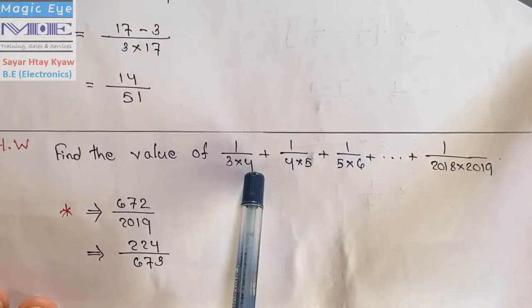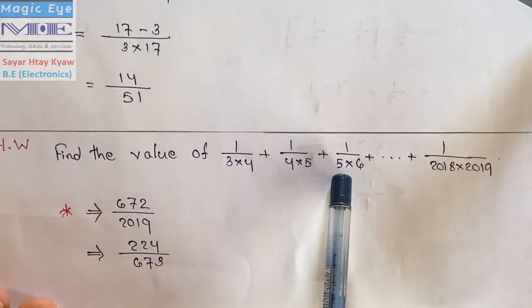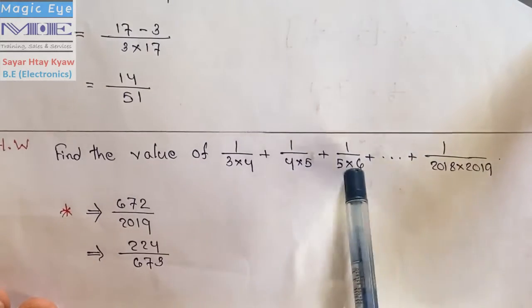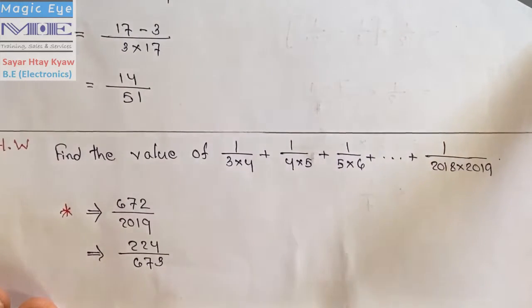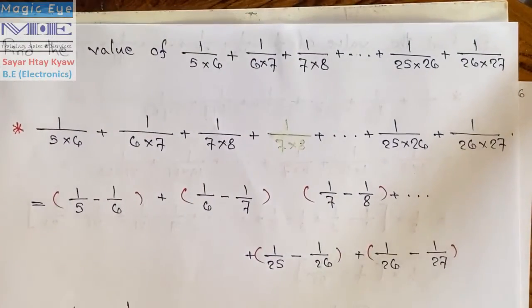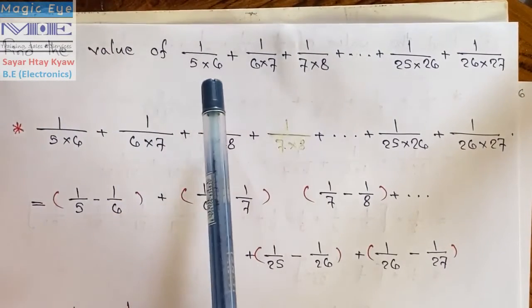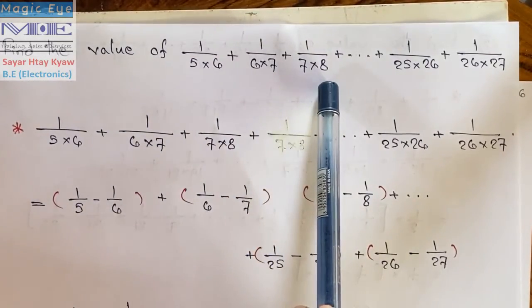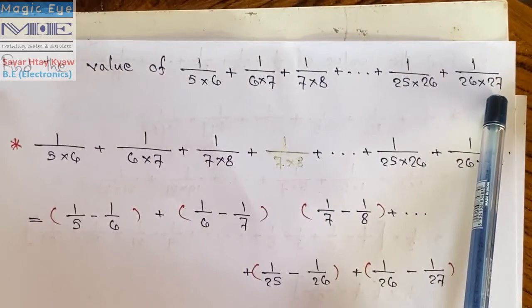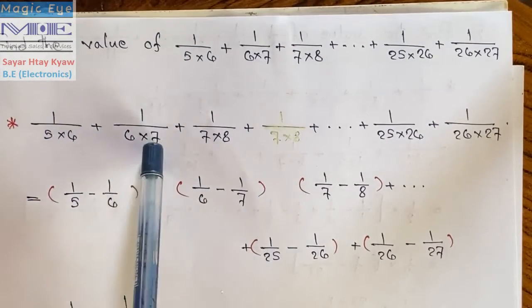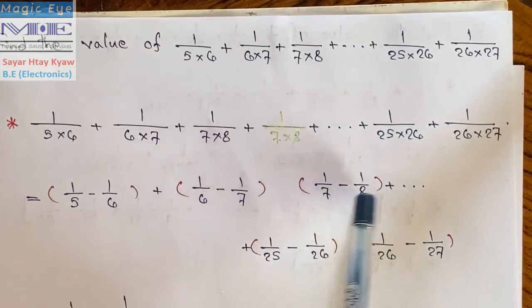Find the value of 3 into 4, 4 into 5, 5 and 6. If you're going to add the terms together, you'll have to add them step by step.